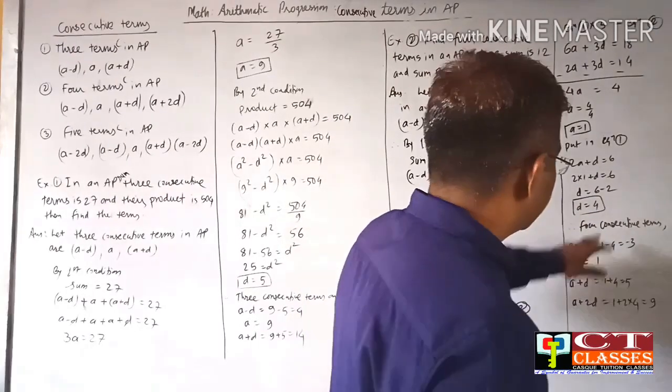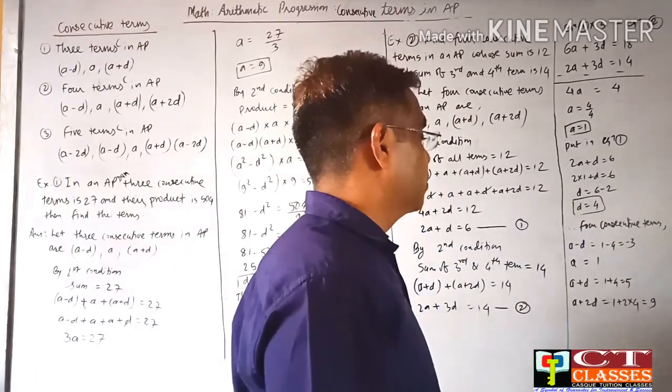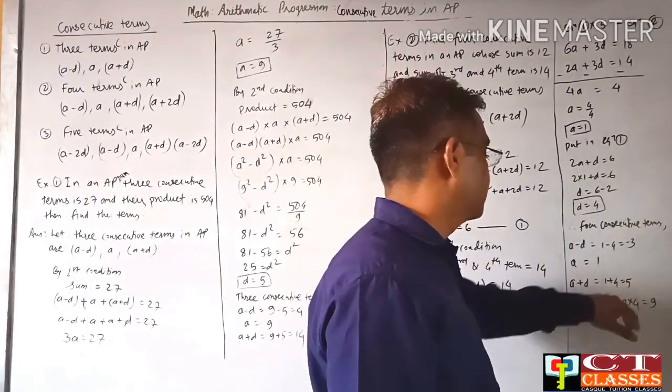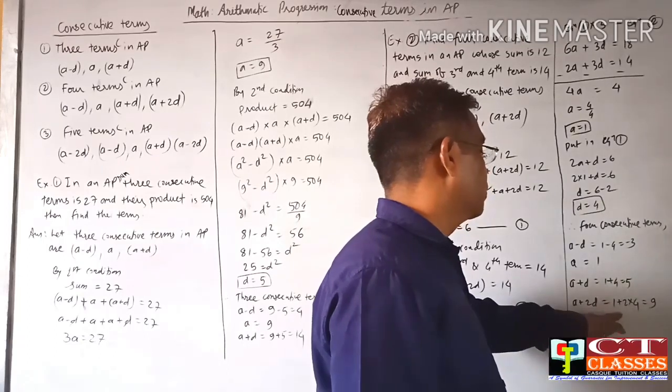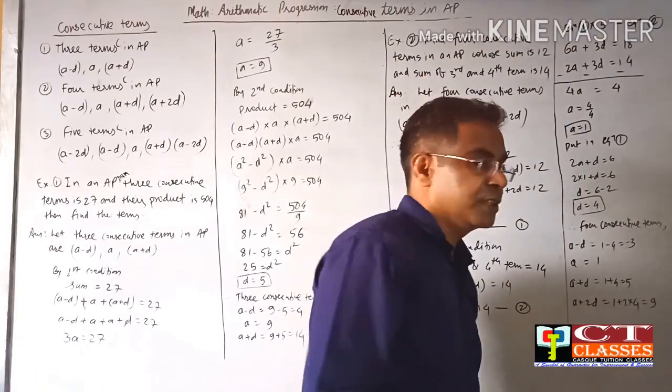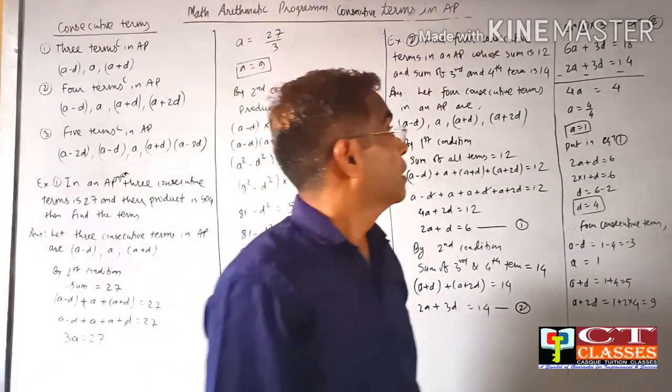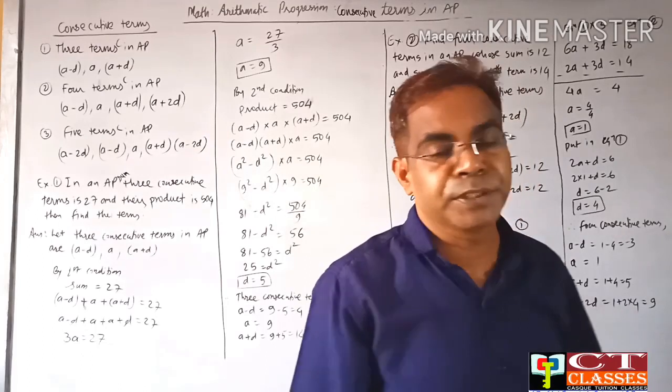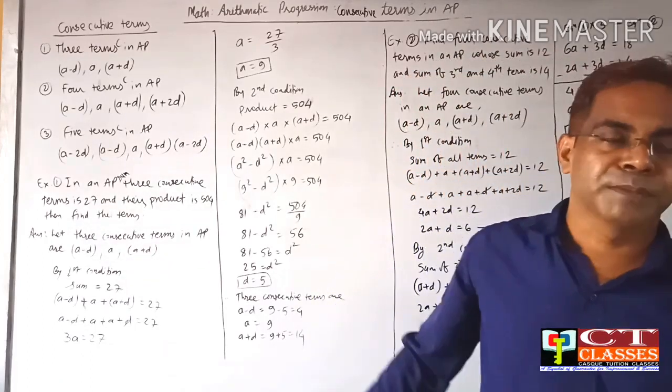Substituting a = 1 into equation 1: 2(1) + d = 6, so d = 4. The four terms are: a-d = -3, a = 1, a+d = 5, a+2d = 9.